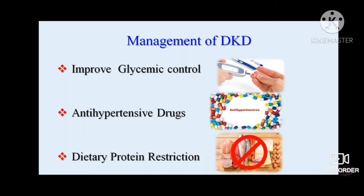Once GFR goes below 30, we must stop metformin. For GFR between 44 to 59, use the same dose; for 30 to 44, reduce to half dose; below 30, stop completely. The next drug to consider is sulfonyl ureas — gliclazide is the only sulfonylurea safe for the kidneys and also safe with cardiac involvement. Glimepiride and glipizide are also used safely.